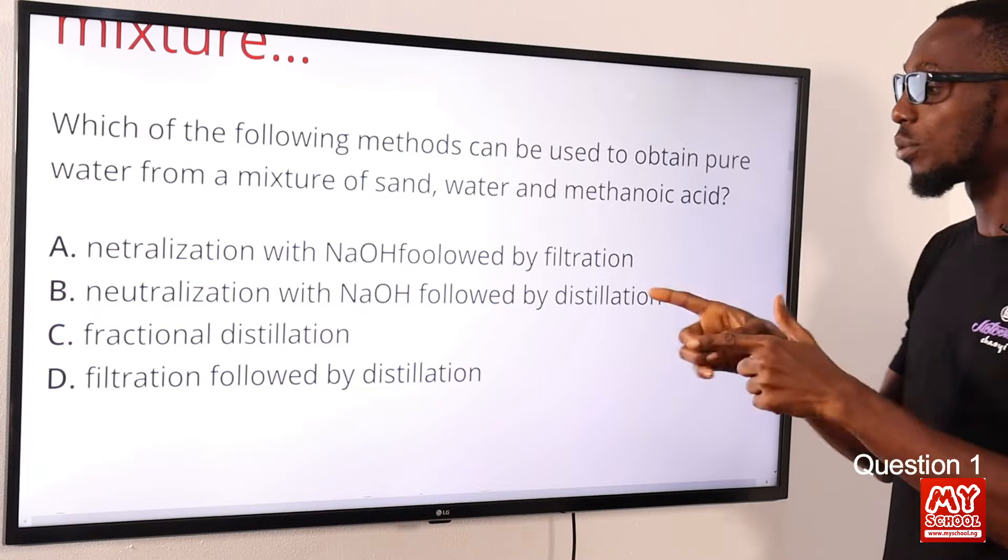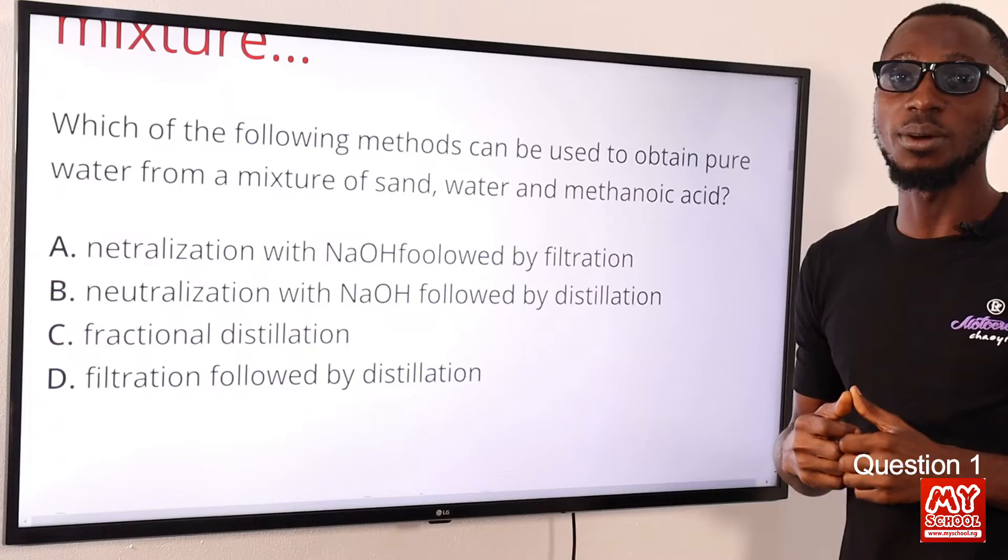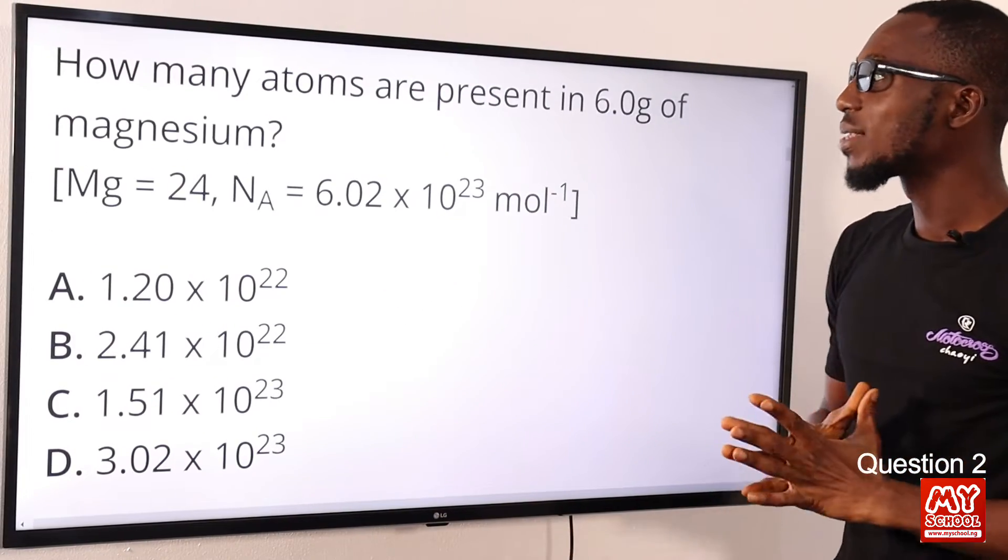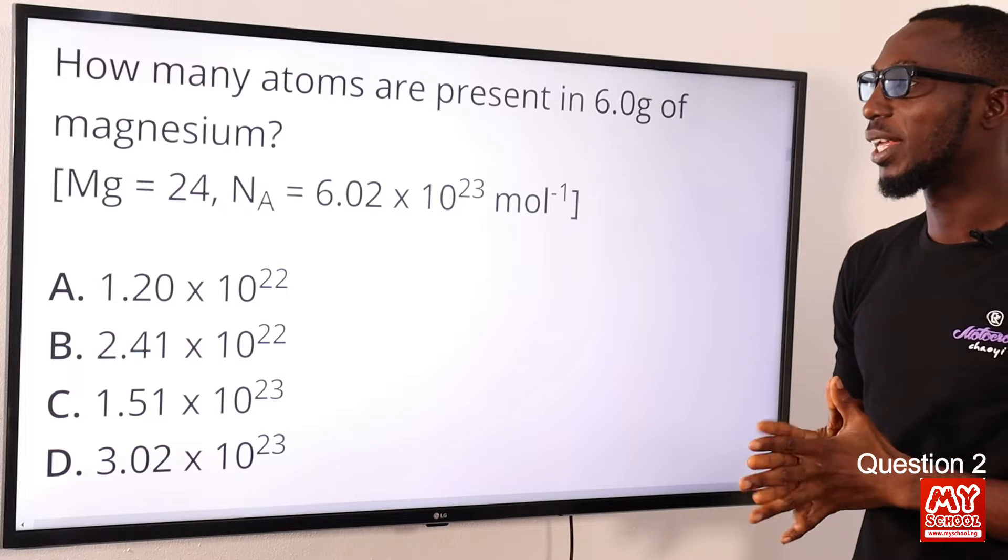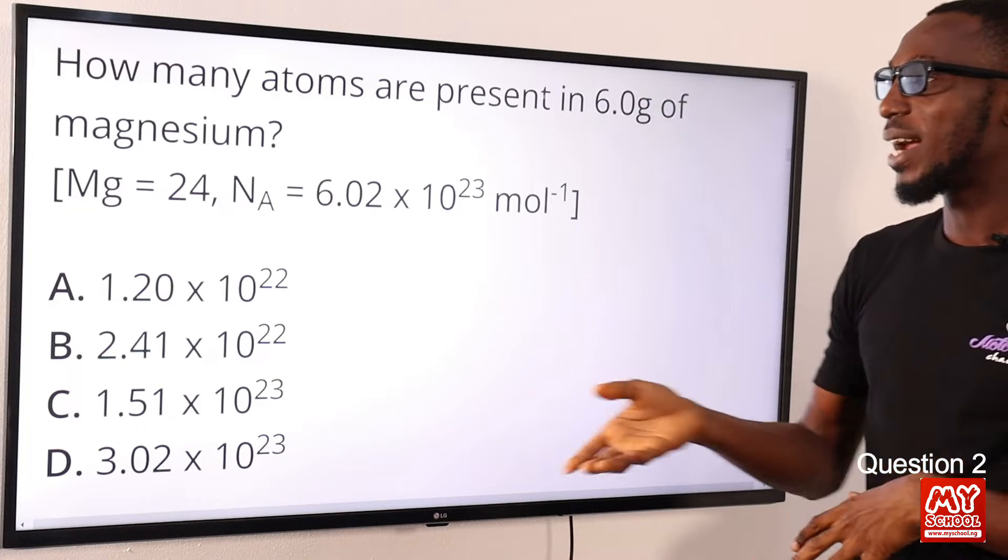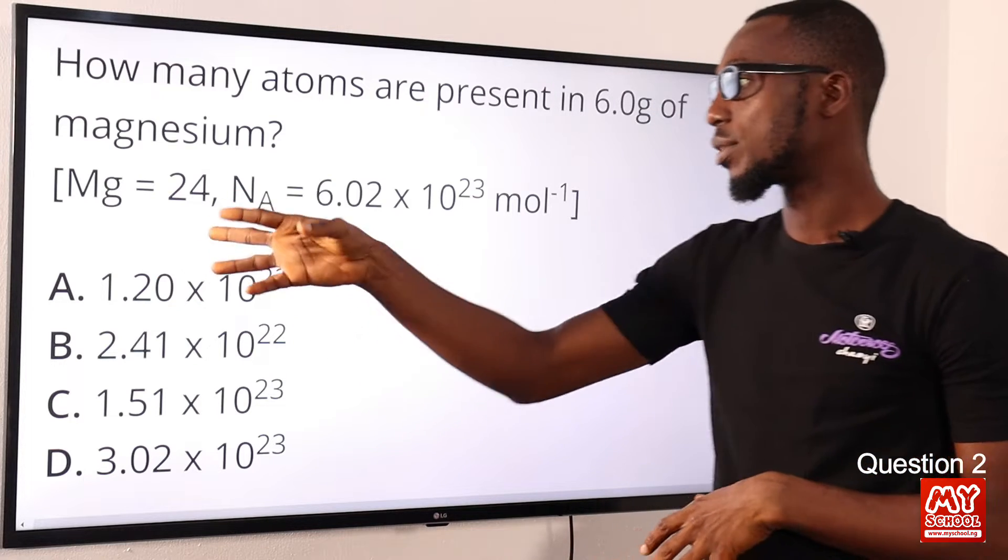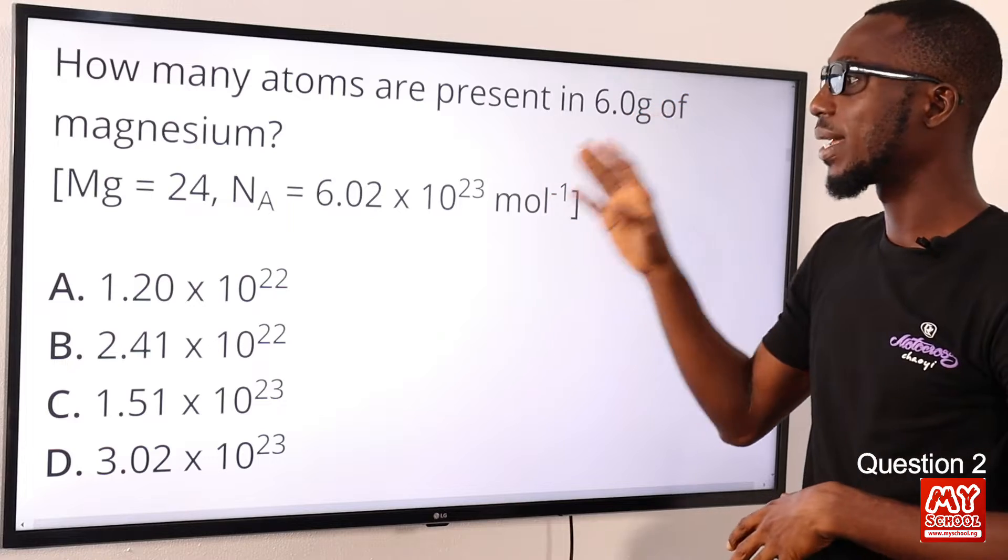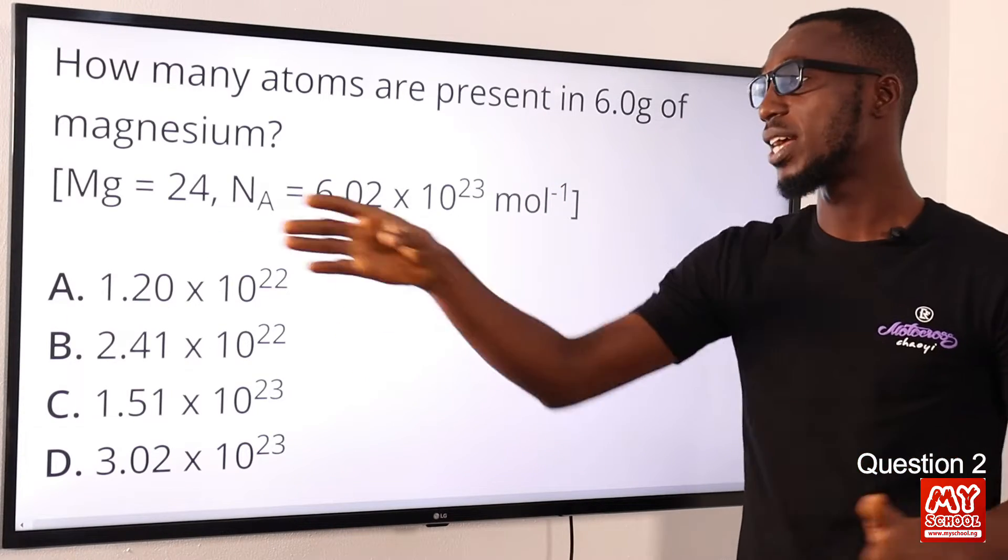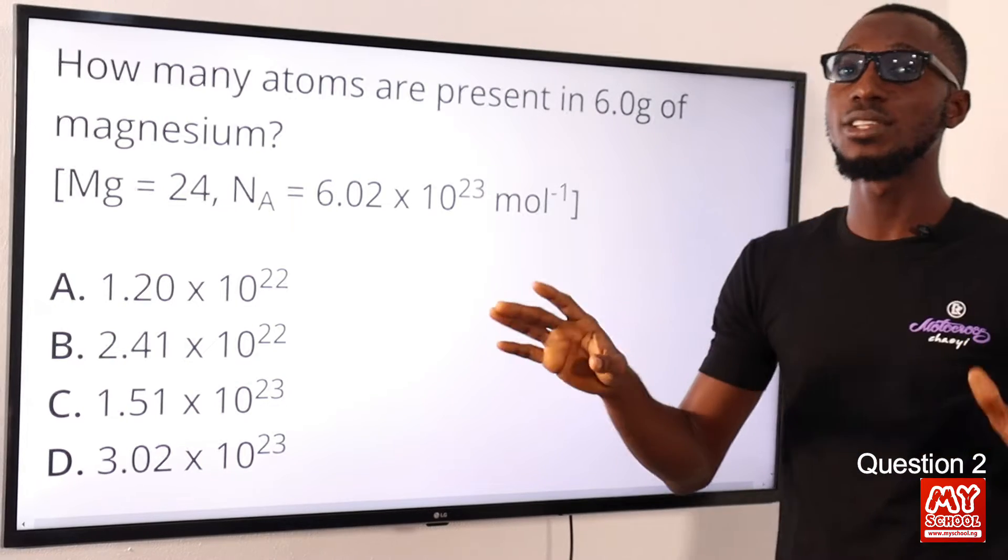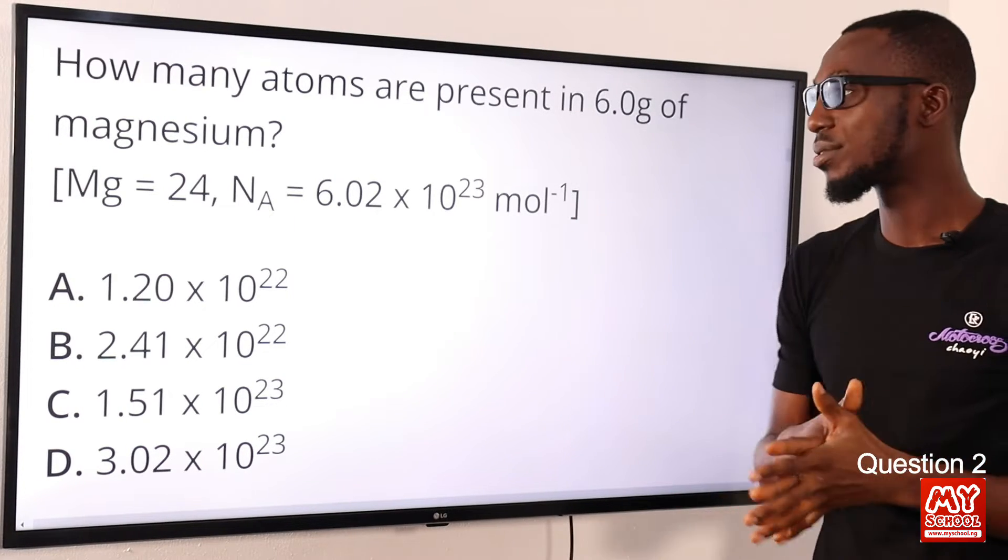Question 2: How many atoms are present in 6.0 grams of magnesium? Typically we know that magnesium should be 24 grams, but here we are looking at 6, and that is 4 places that magnesium has been divided into, or you can say 24 divided by 6 is 4, so it has been split into 4.